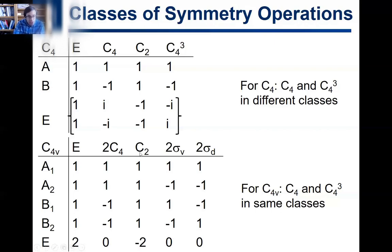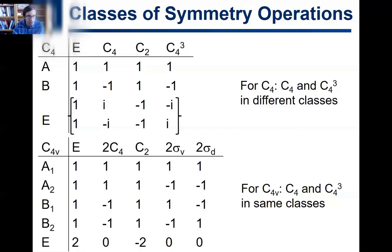You'll also notice that C2 is in its own class in both C4 and C4v. You could maybe envision it being grouped with the C4 operations — after all, C2 is just doing a C4 twice, so it's C4-squared, a 180-degree rotation.